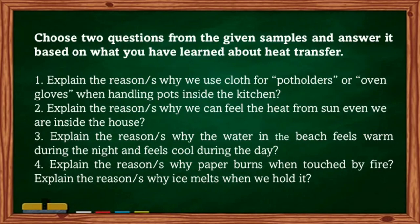For Activity 4, answer these four questions: Number one — explain why we use cloth, potholders, or oven gloves when handling pots in the kitchen. Number two — explain why we can feel heat from the sun even when inside the house. Number three — explain why water at the beach feels warm at night and cool during the day. Number four — explain why paper burns when touched by fire and why ice melts when we hold it.